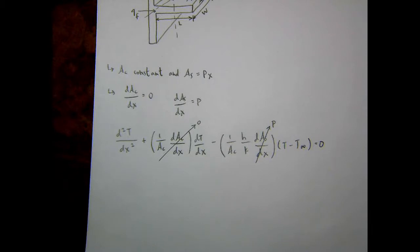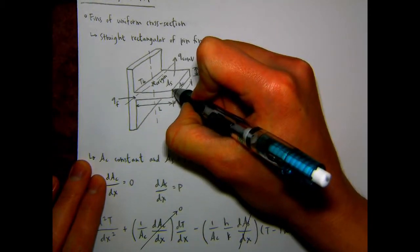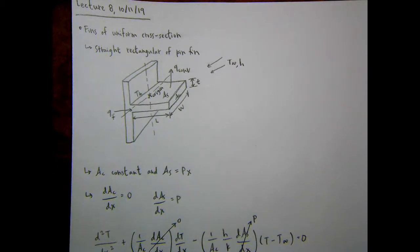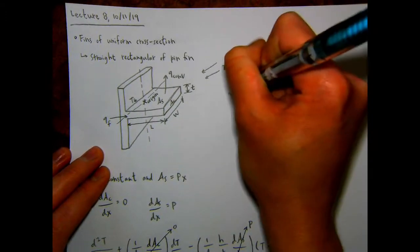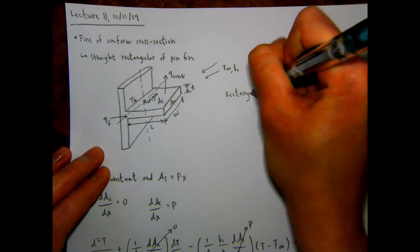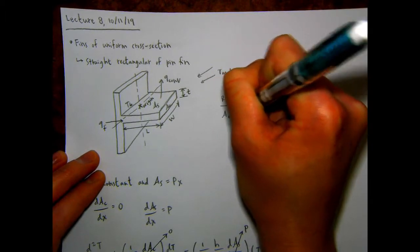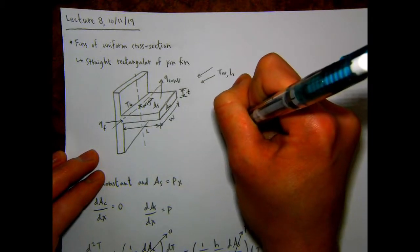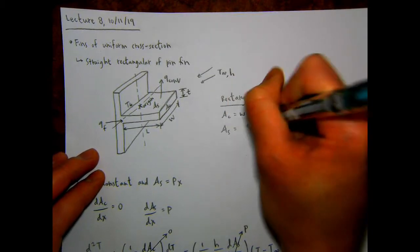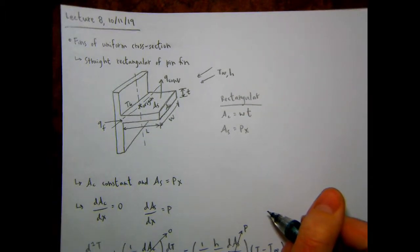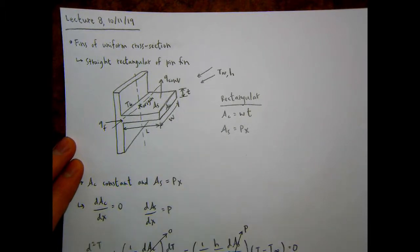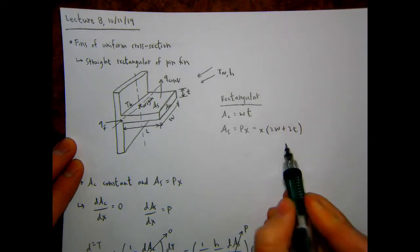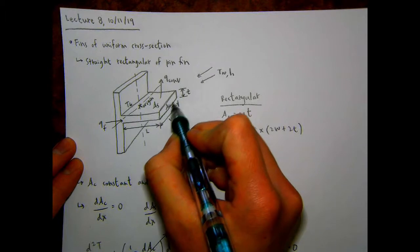The perimeter is the top plus two sides plus the bottom — traced around the outside of the cross-section. For a rectangular fin, A_sub_C equals W times t, and the surface area equals P times x, where the perimeter is 2W plus 2t. So the full surface area is x times (2W + 2t).